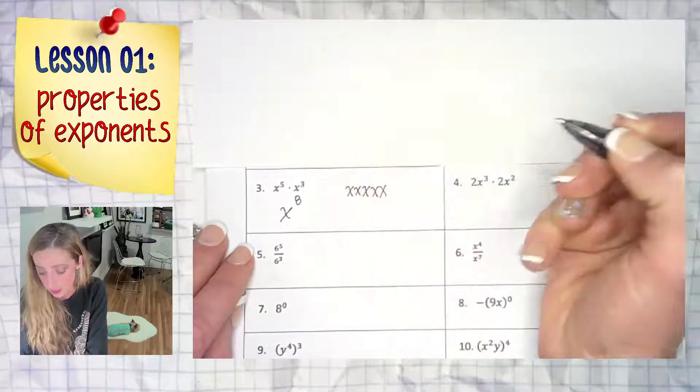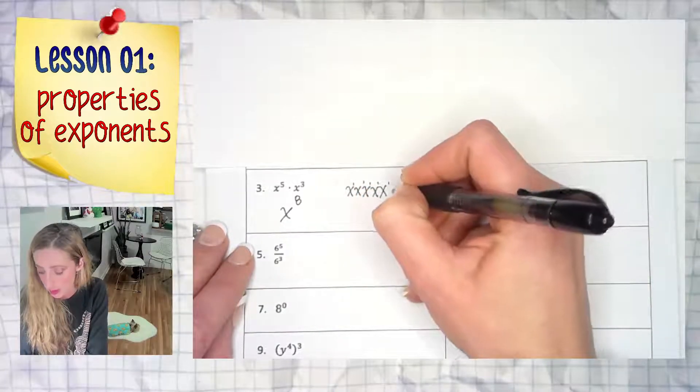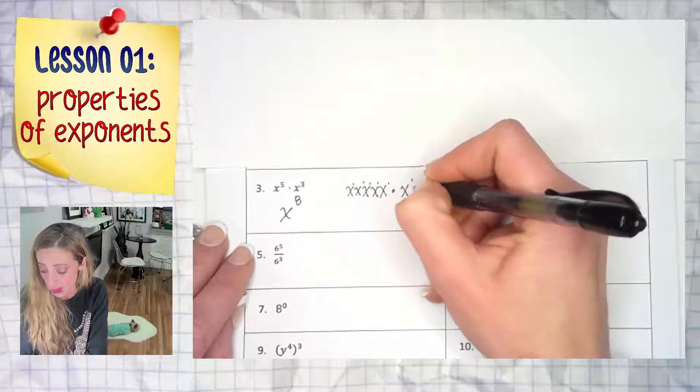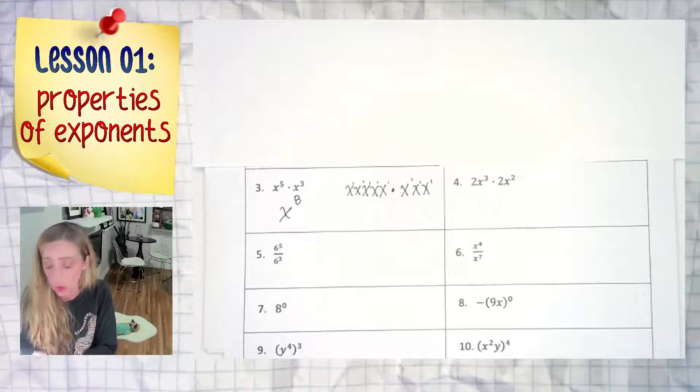Anyone who needs a little breakdown: x to the fifth just means x times itself five times, those all have the little invisible one as their exponent, times x to the third which is x times itself three times.